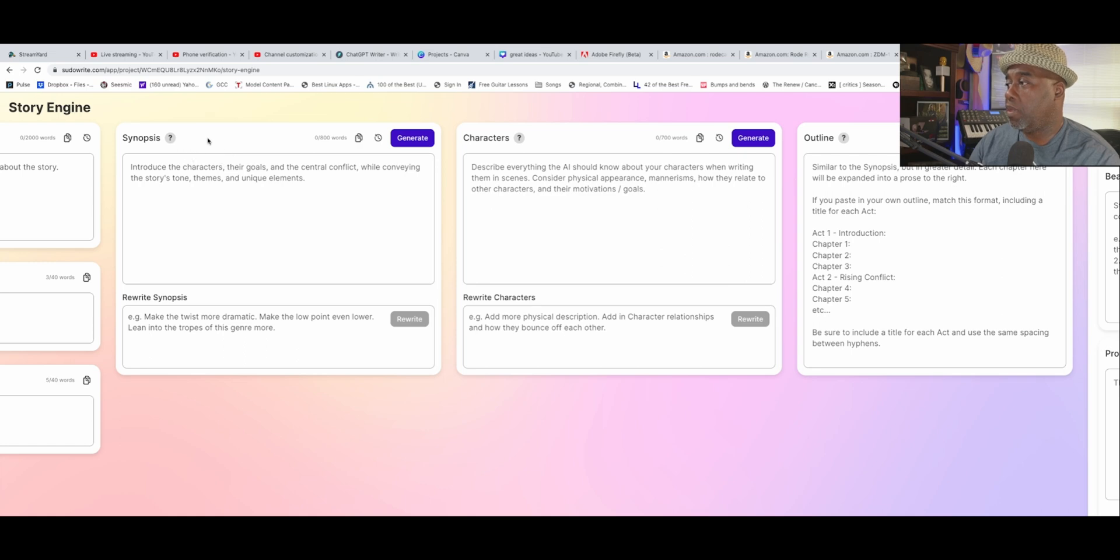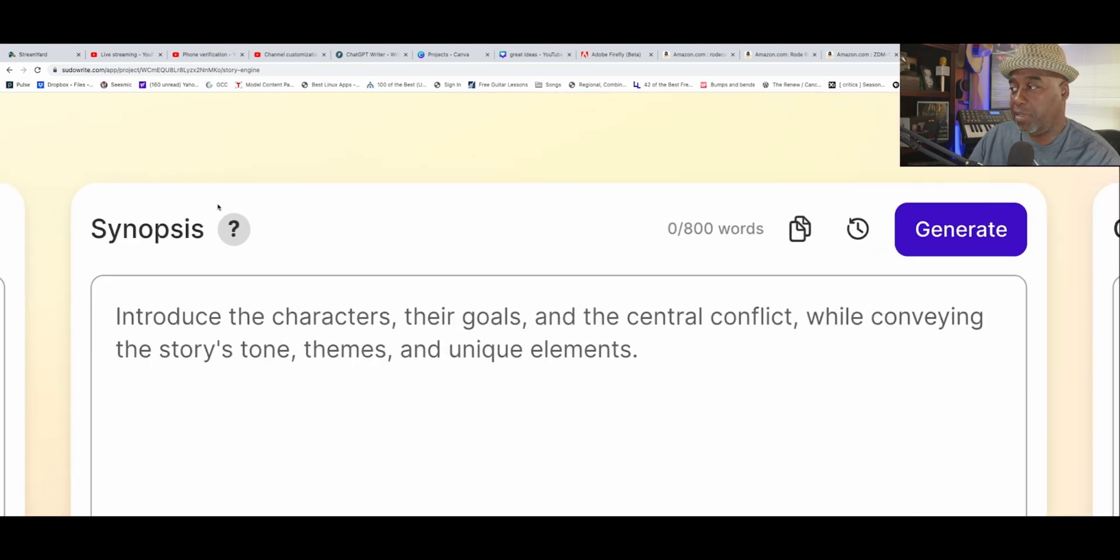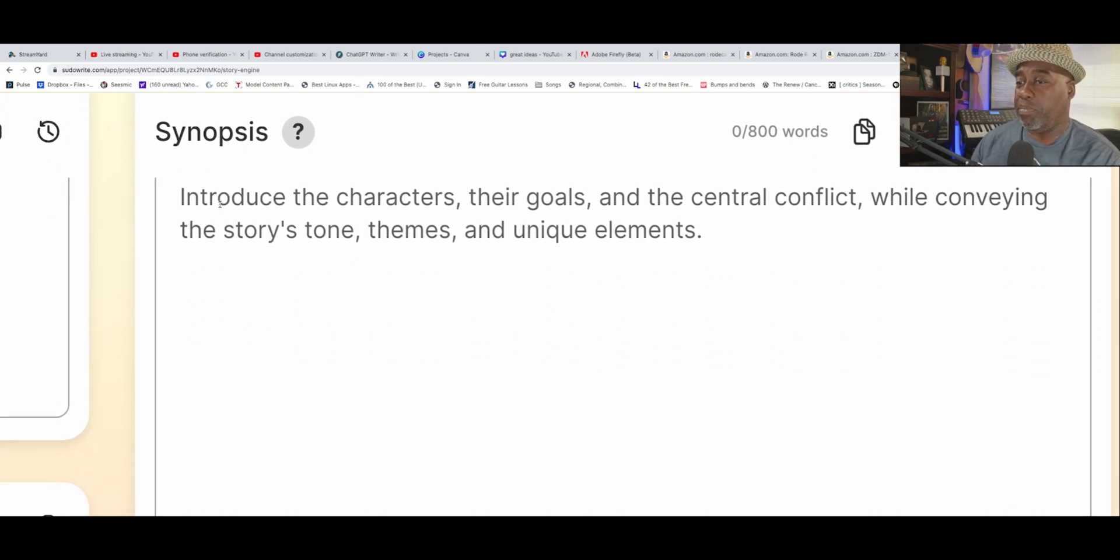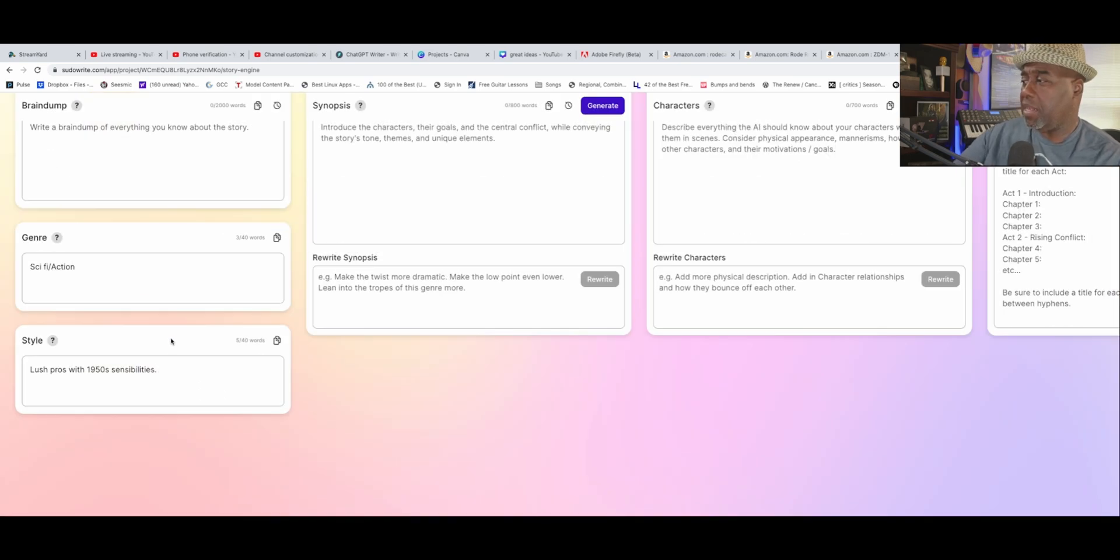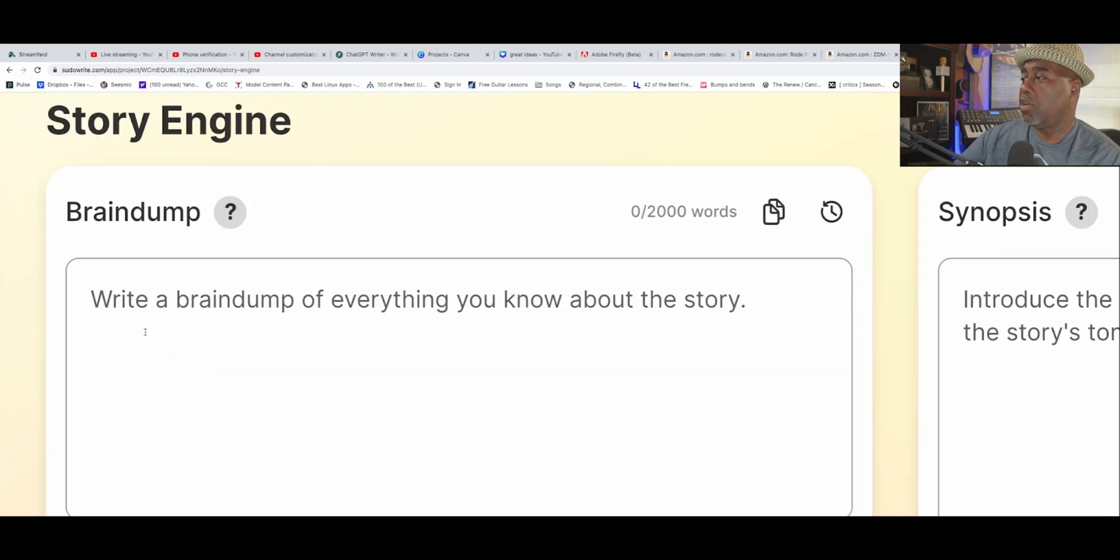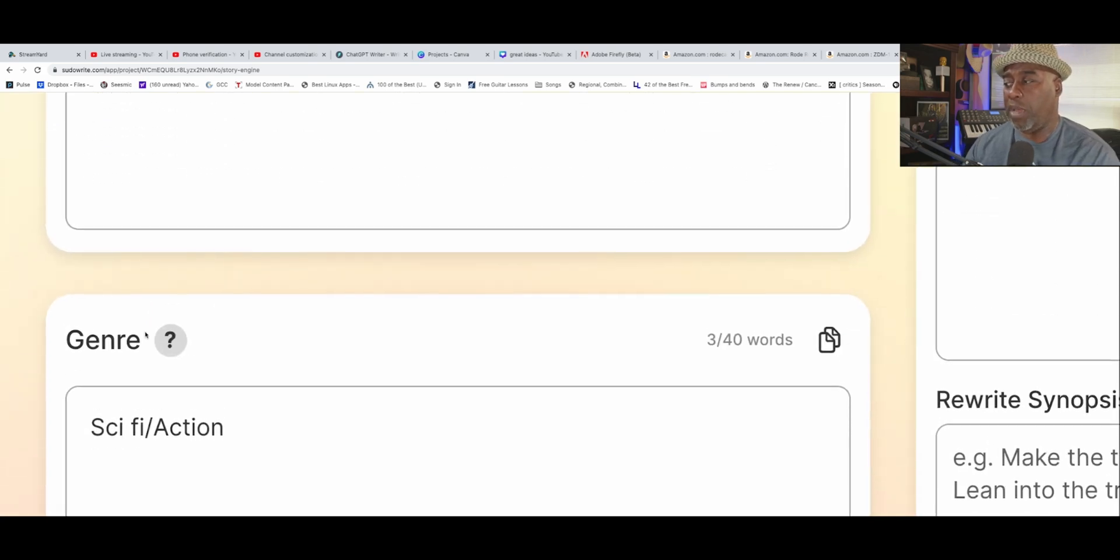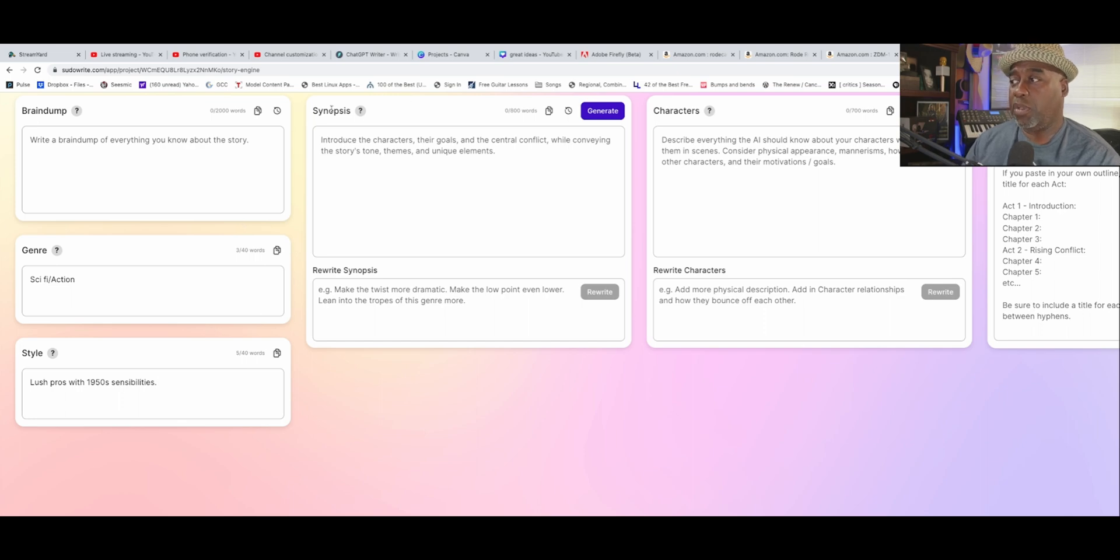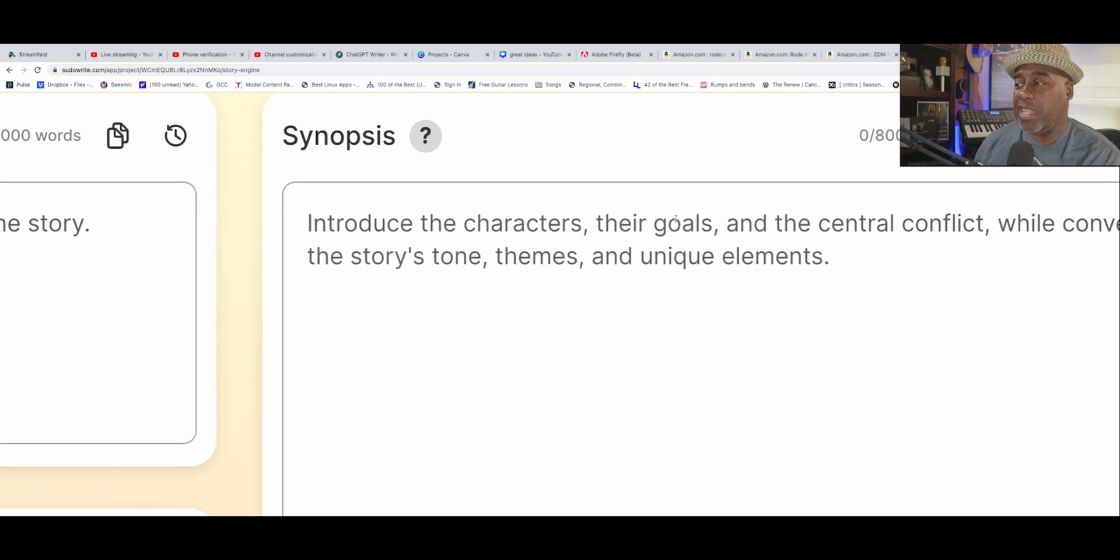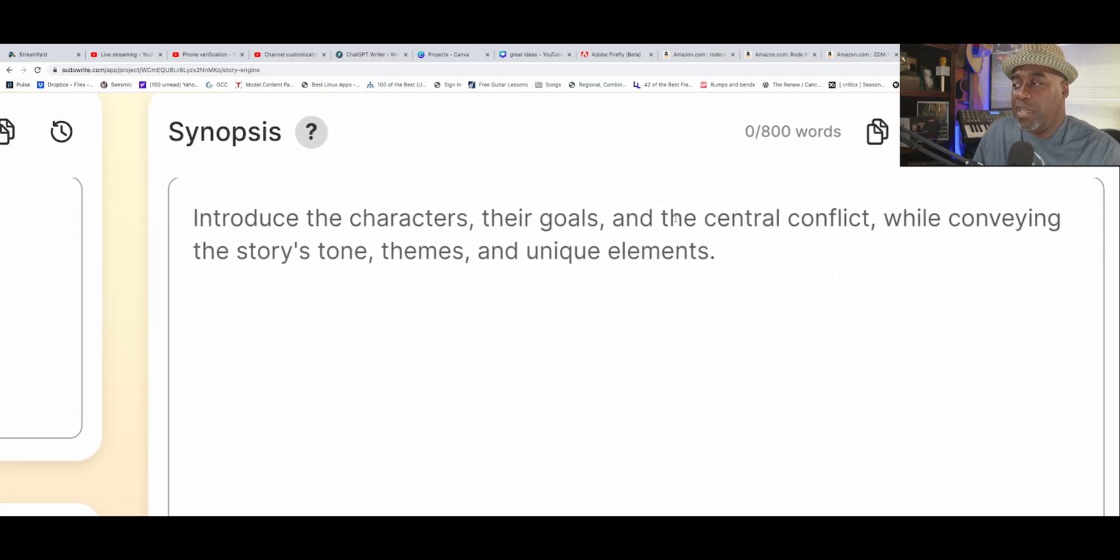The synopsis will write out whatever that brain dump that you put out there. You hit generate, and the brain dump and the style and the genre all culminate into the synopsis. Then, the synopsis becomes this thing that creates characters and stuff like that, and it will create up to 800 words.